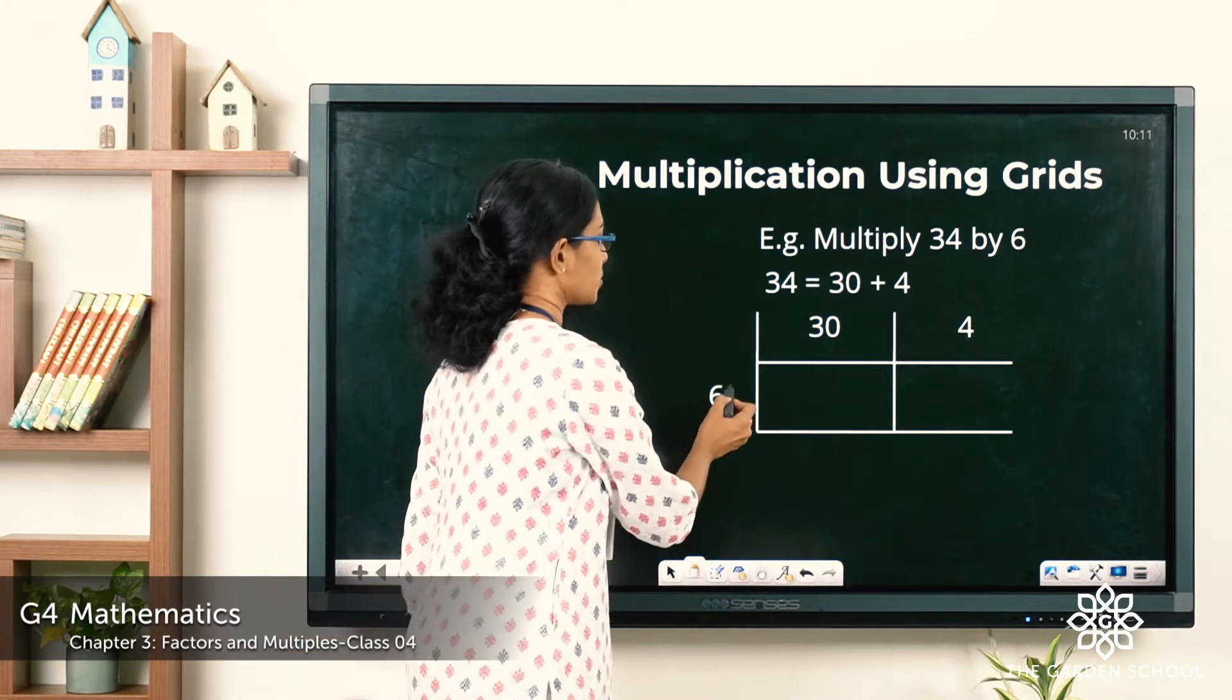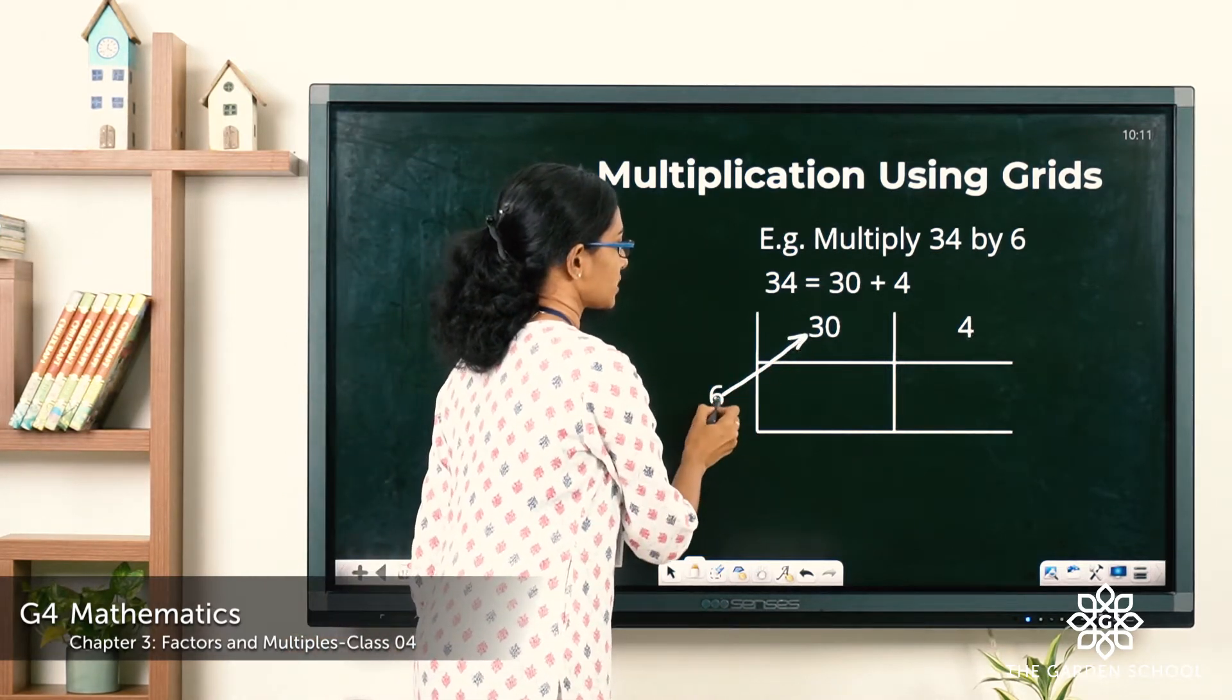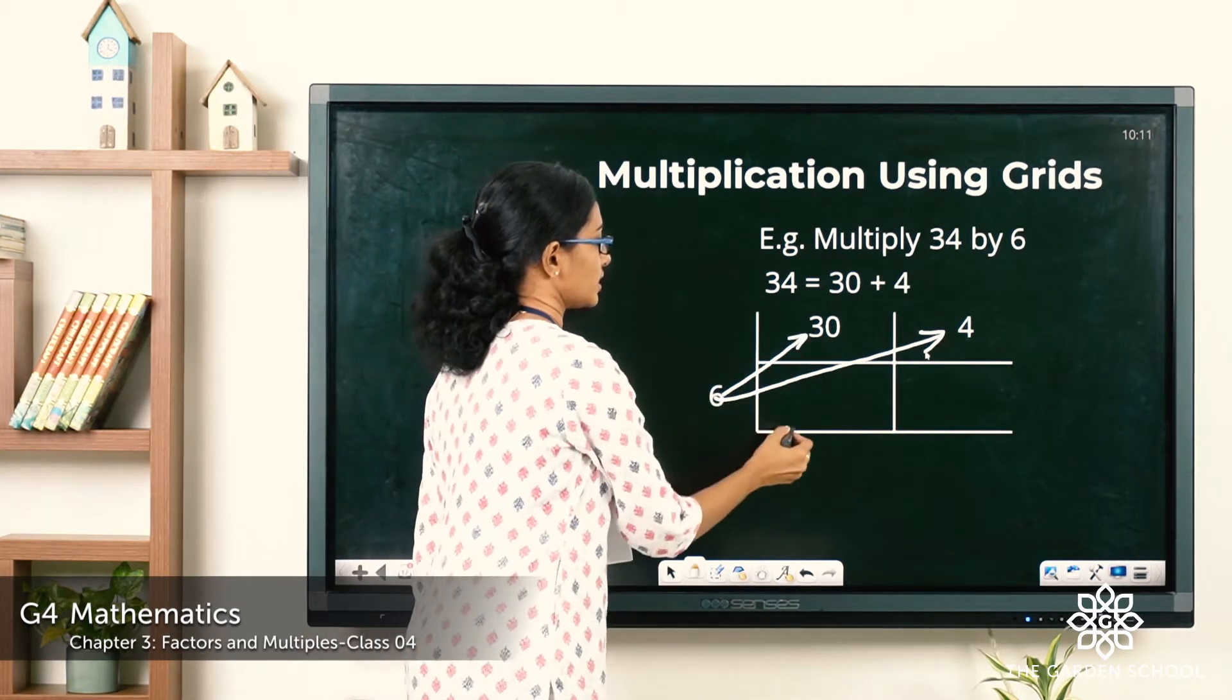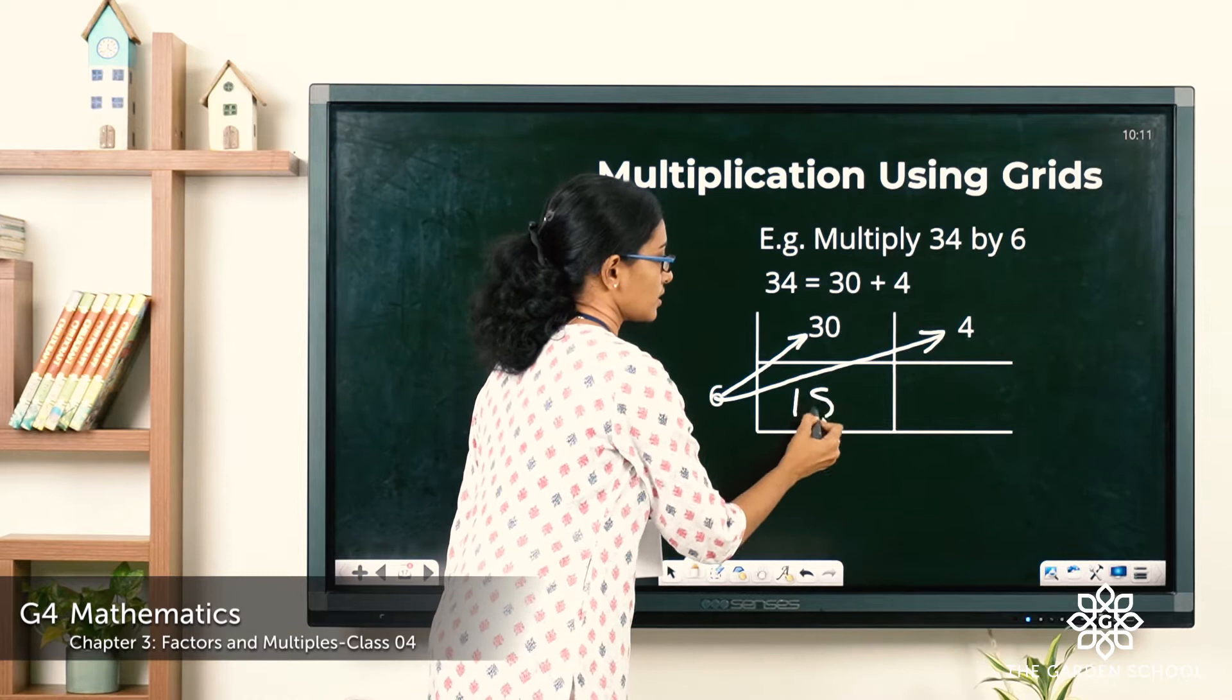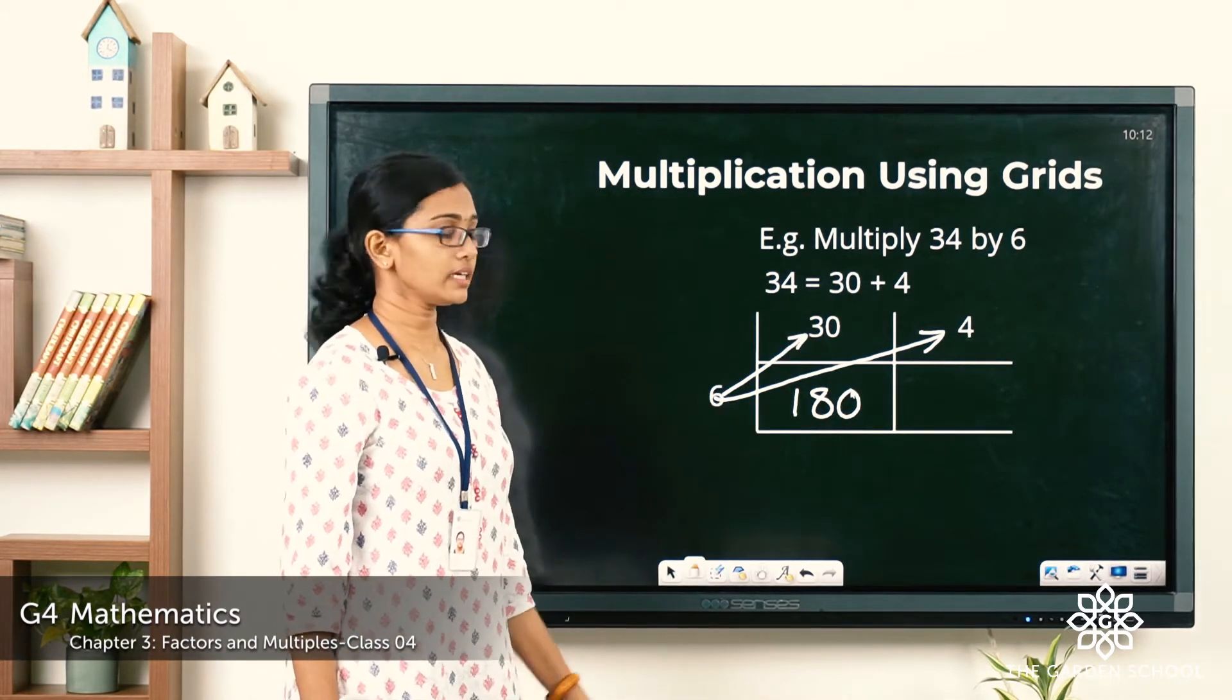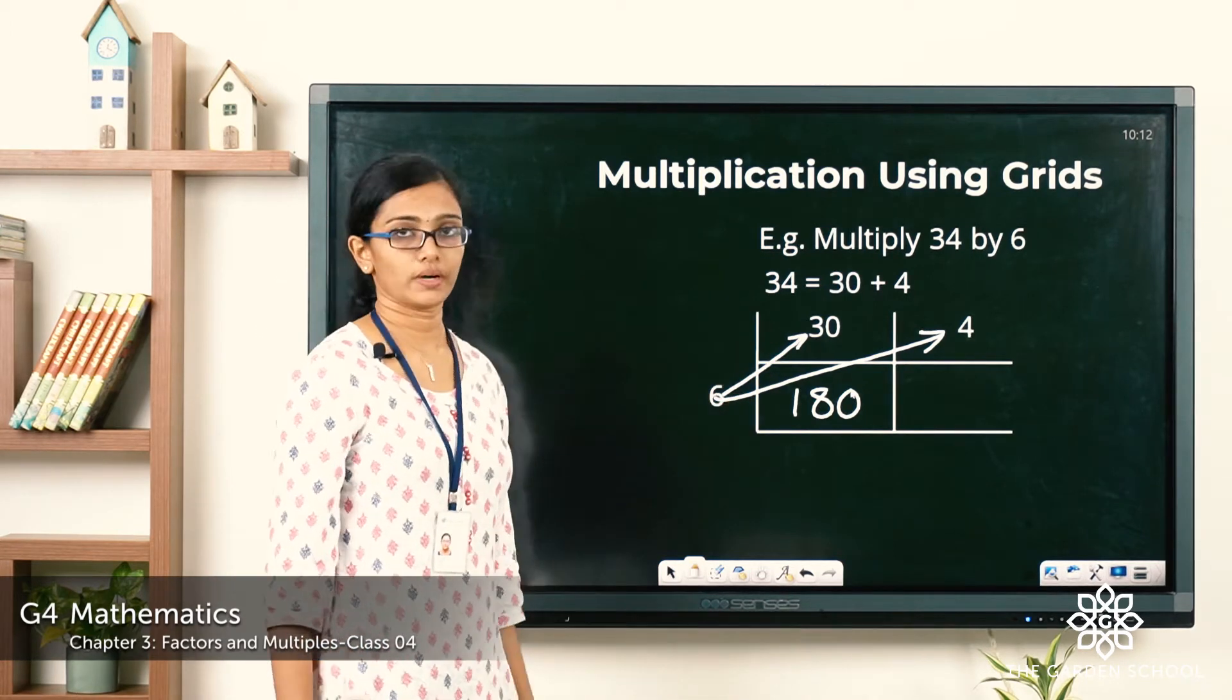Now we are going to multiply this with each of these numbers. 6 into 30, what is it? It is 180. 6 times 3 is 18, then we put the 0 to the right. So 6 into 30 is 180.